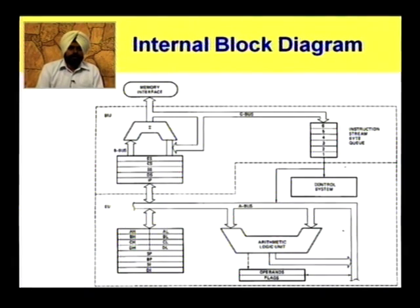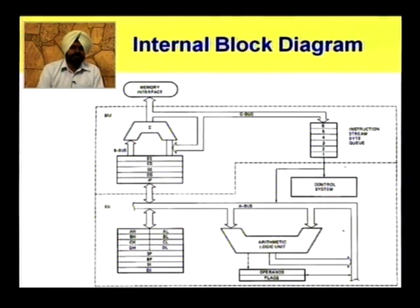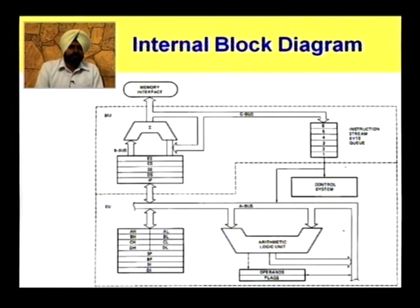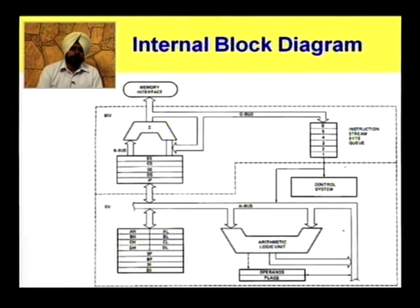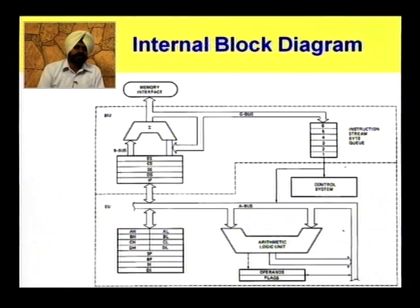Along with this, we have an Instruction Queue. 6 bytes of instructions can be prefetched by the microprocessor when the buses are not in use. Now, once the instruction has been fetched by the microprocessor, it is the duty of the Execution Unit to decode and execute them.